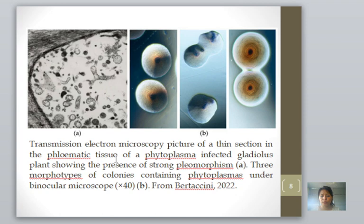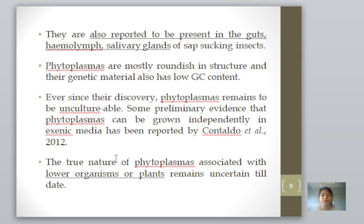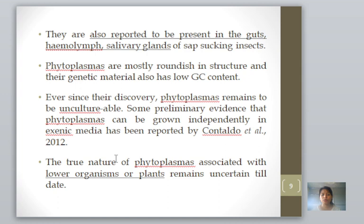These pictures show infected tissues with colonies of phytoplasmas as visible from the binocular microscope — not from culture, since they are not culturable. Phytoplasmas are also reported to be present in the guts, hemolymph, and salivary glands of sap-sucking insects such as leafhoppers and grasshoppers. In small insects, blood is absent; instead they have a fluid called hemolymph that acts as blood. Phytoplasmas are mostly roundish in structure and their genetic material has a low GC content, consistent with their very small genome size.